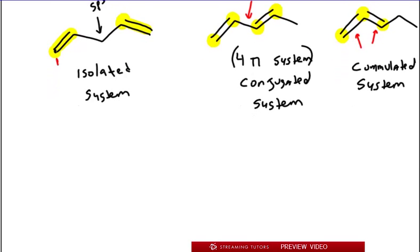So what we're going to do is we're going to look at these systems and number them out. So let's say this carbon is one. This is two, three, four, and five. Here's one, two, three, four, and five. Here's one, two, three, four, and five.